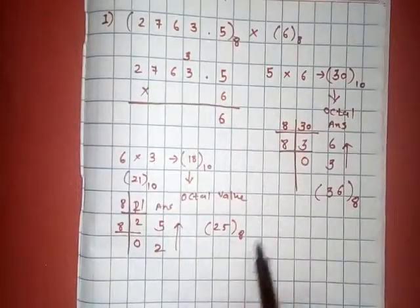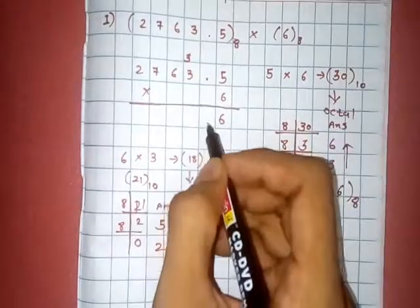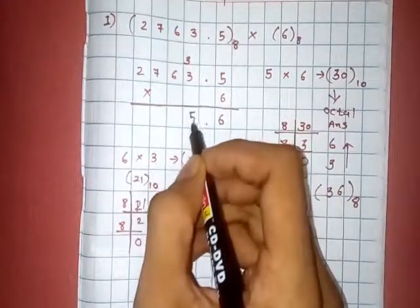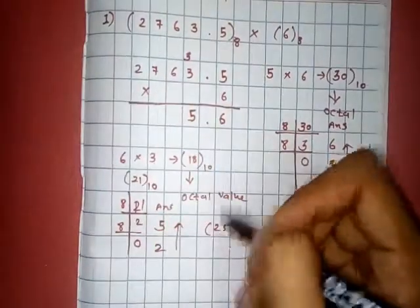So write it in opposite direction and that is 25 and this is 21 in decimal, 25 in octal. So 5 put here and 2 is carry.